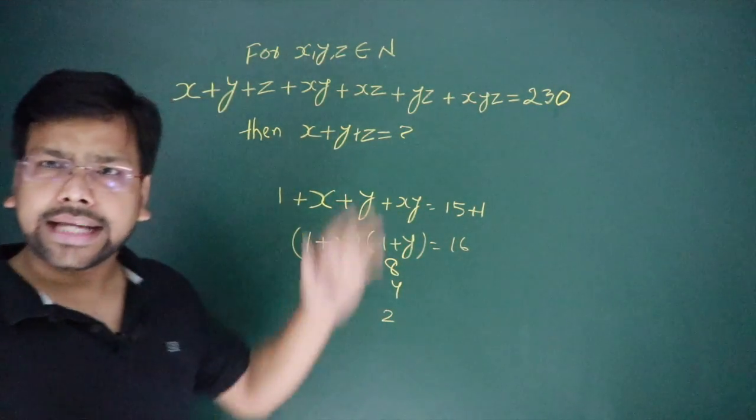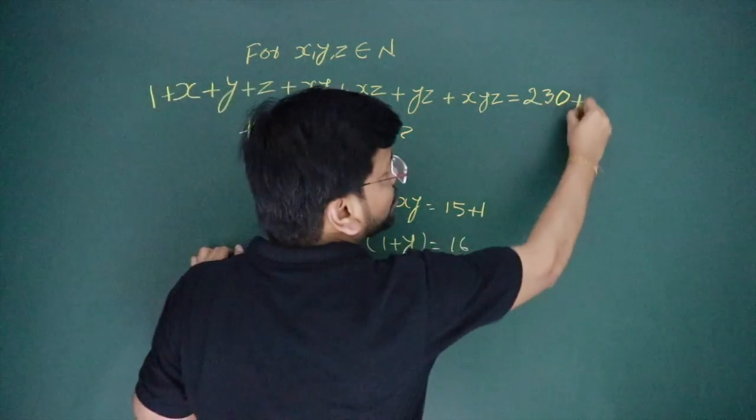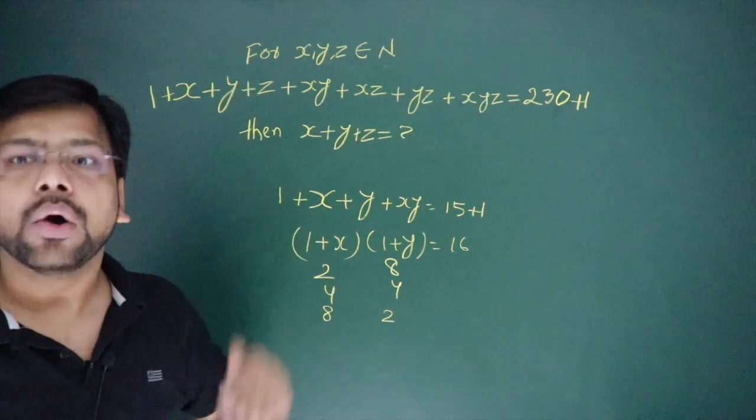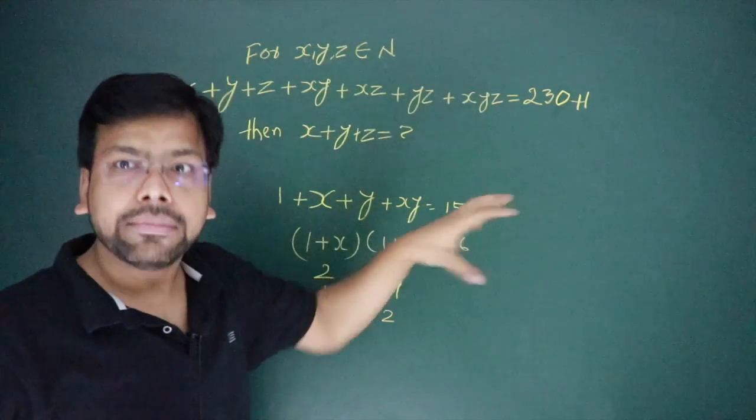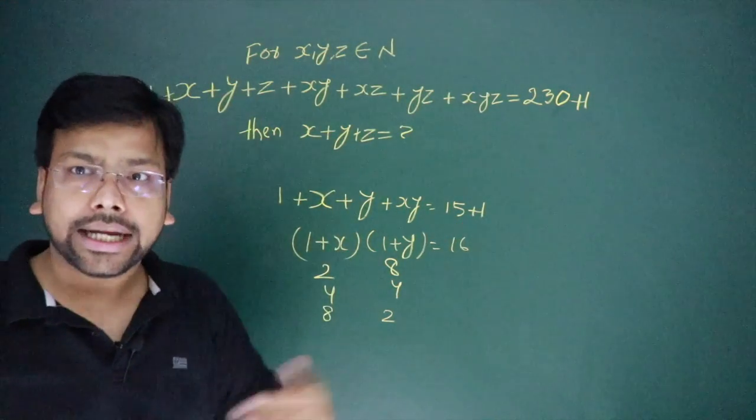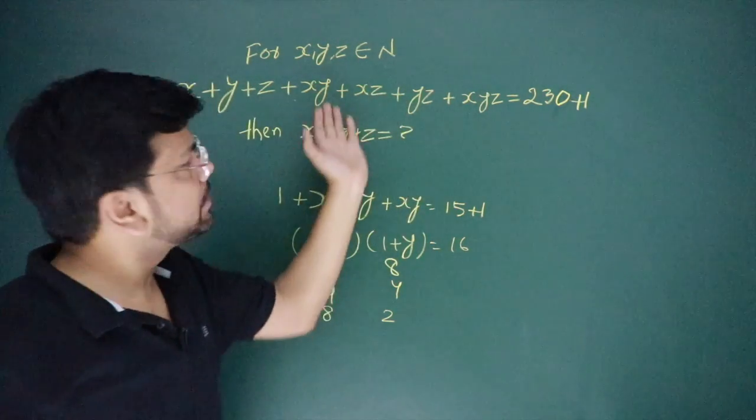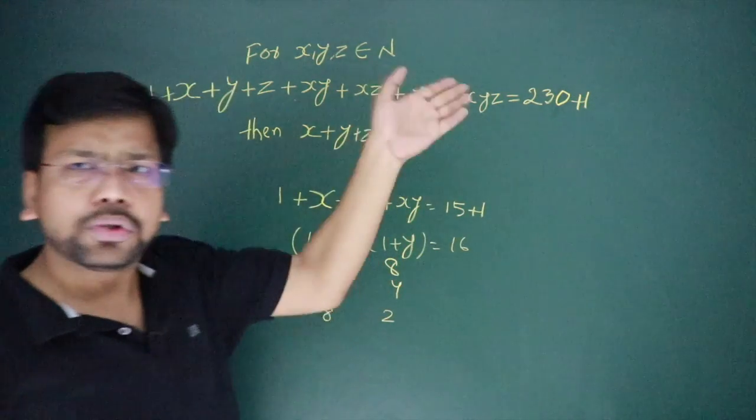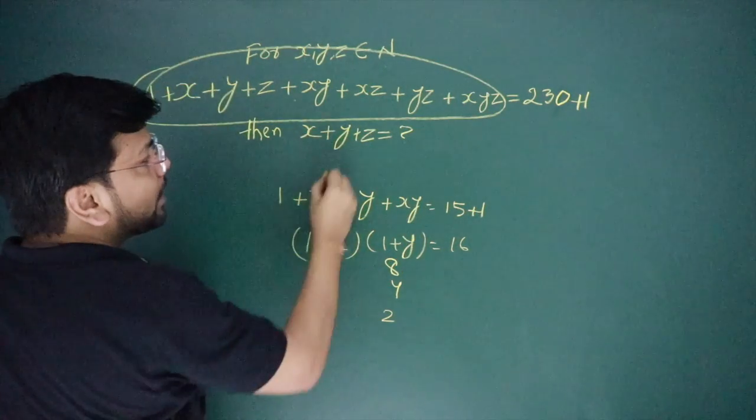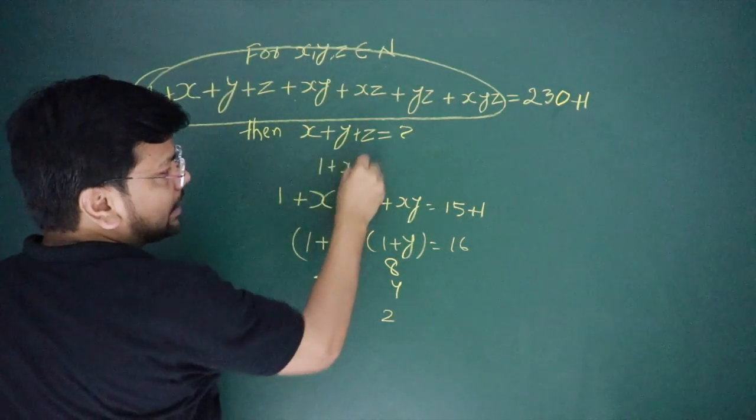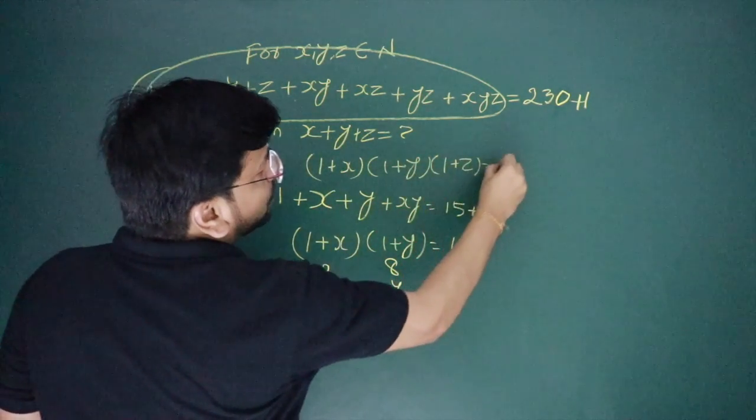If you have this type of question, add one on both sides. Summation of single, summation of double, summation of triple at a time—add one on both sides. If you have four variables X plus Y plus Z, summation of single at a time, double at a time, triple at a time, four at a time, add one on both sides. Add one, then break: one plus X, one plus Y, one plus Z is equal to 231.